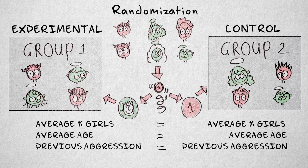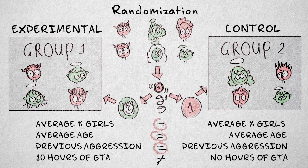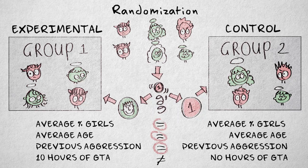On average, randomization ensures that there is no systematic difference between the groups other than the difference in the independent variable, the cause variable. Of course, in any one particular study, it is possible, entirely due to chance, that randomization fails and we end up, for example, with more girls in the control group, possibly explaining why this group is less aggressive.